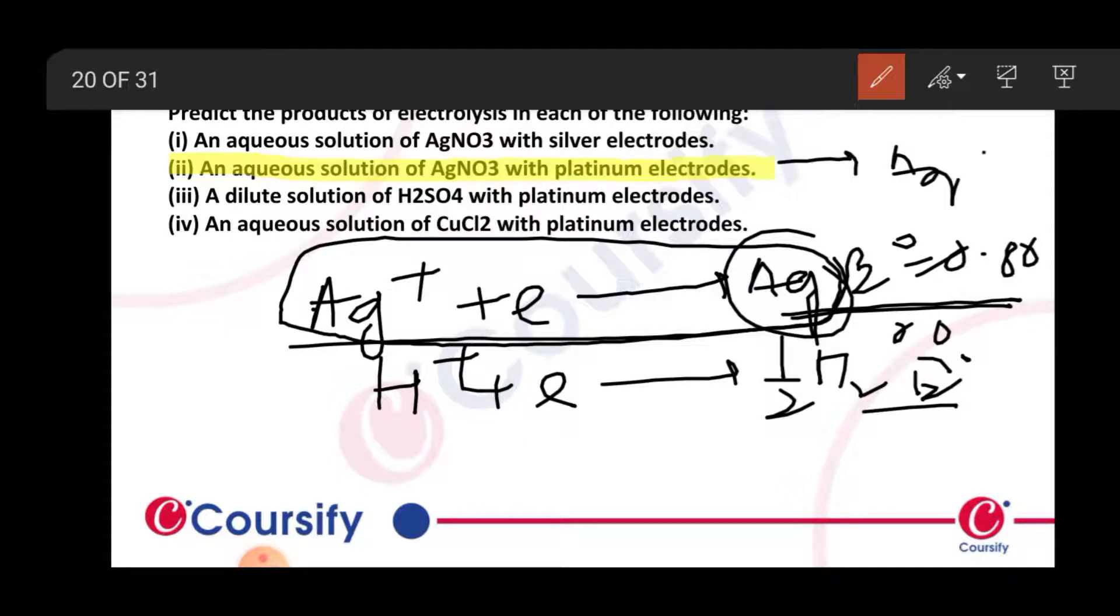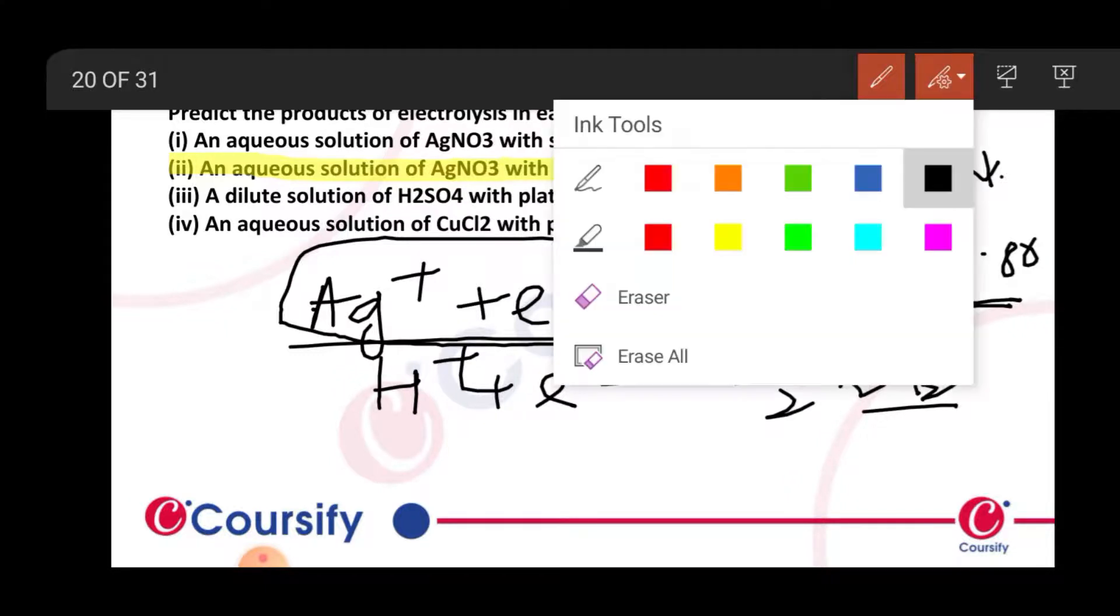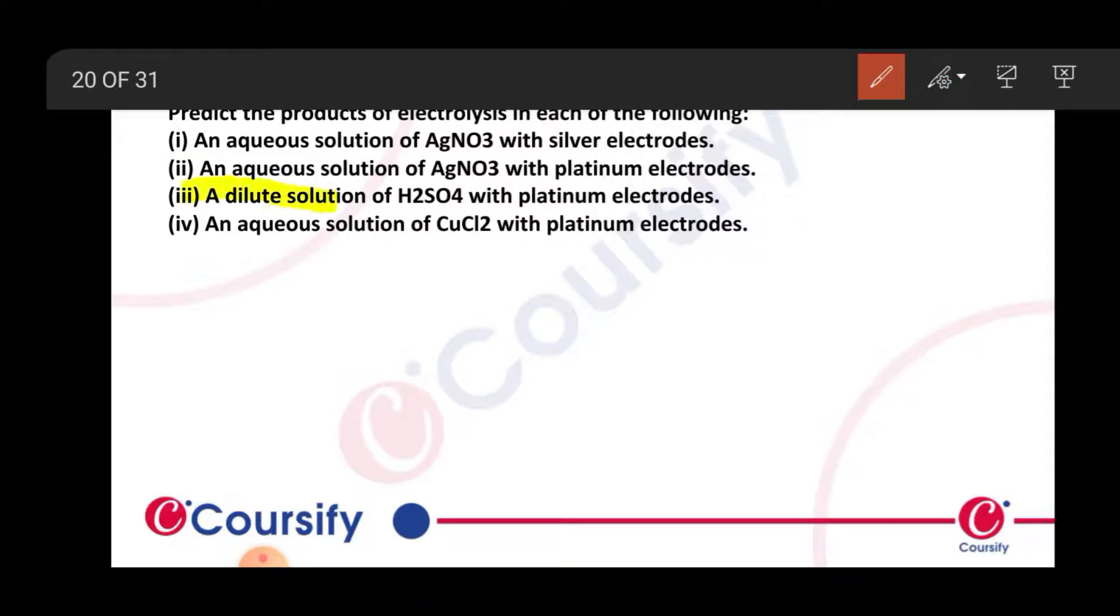Since platinum electrodes are inert, the anode is not attacked by positive ions. Therefore, OH- or negative ions can be oxidized at the anode, but hydroxide ions having a lower discharge potential get preference and decompose to liberate oxygen. Hydroxide decomposes and oxygen is liberated.